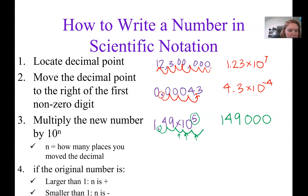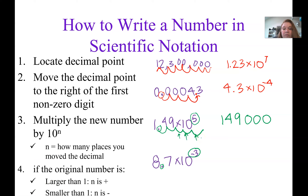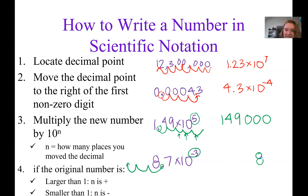Let's do one more. Starting with 8.7 times 10 to the negative 3: I find my decimal place, and because the exponent is negative, I need to move the decimal to the left 3 places to make the number smaller than 1. So we get 0.0087, with zeros as placeholders, and we put a zero in front of the decimal place so it is very obvious.